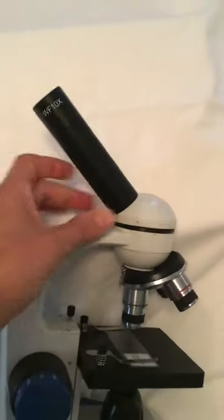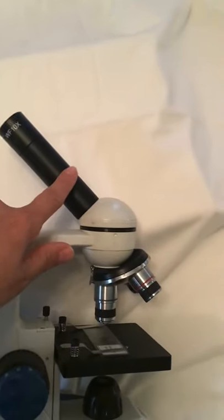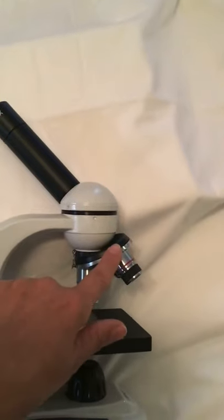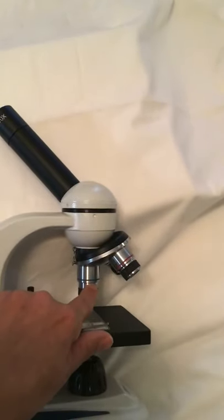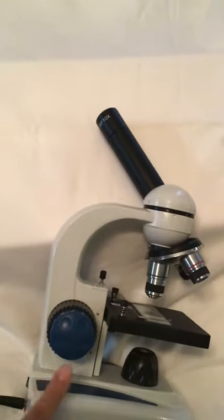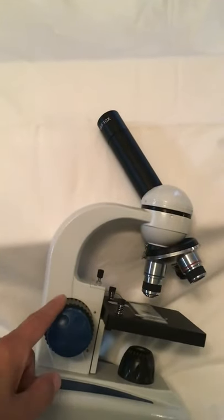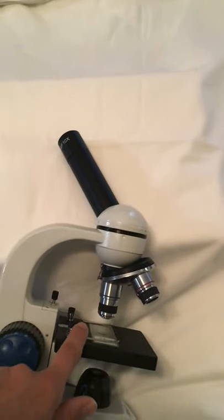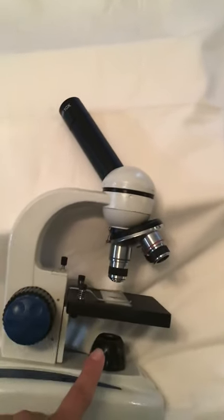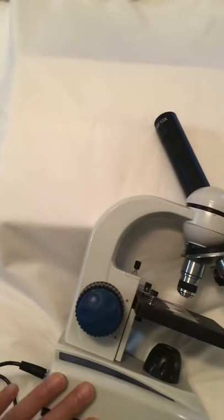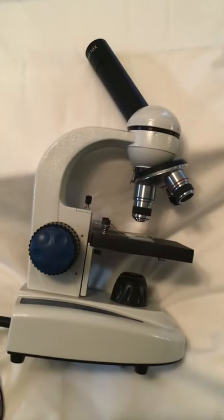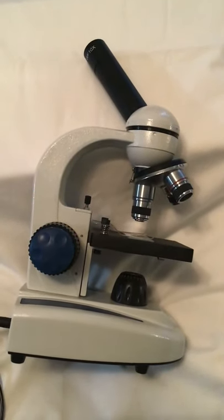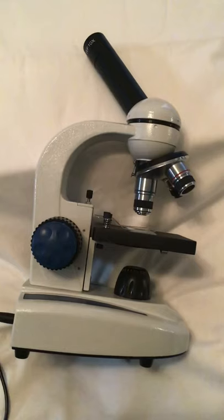So again, to review, we have the eyepiece, body tube, rotating nose piece, objective lenses, arm, fine adjustment, coarse adjustment, stage, stage clips, lamp or light source, base, and then of course you have your power source. And that, class, is the basic compound microscope.